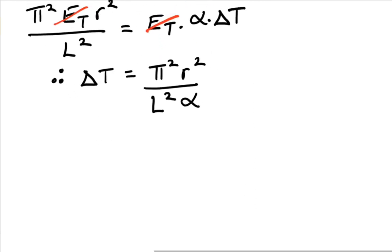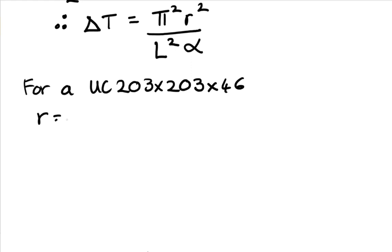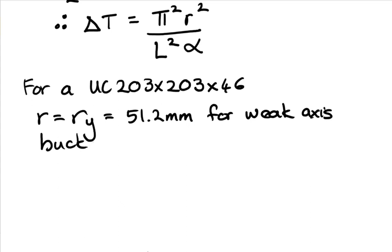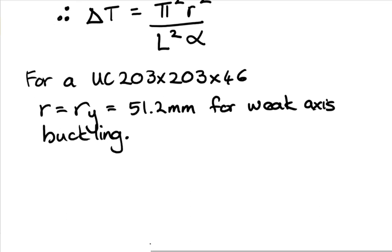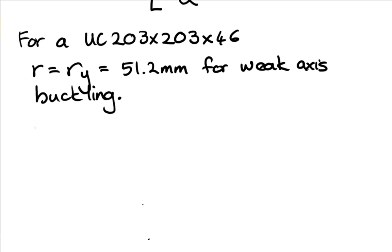Now we are dealing with a known section size for UC203x203x46. So it's 203 mm wide, 203 millimeters high, and 46 kilograms per linear meter. Our r equals our y-axis as we discussed earlier, 51.2 millimeters for weak axis buckling. And either axis could go but you would look for the highest KL over r. And since the lengths are the same the resistance will simply be based upon the lowest r value. And then E equals E_T equals 200 GPa, assumed.